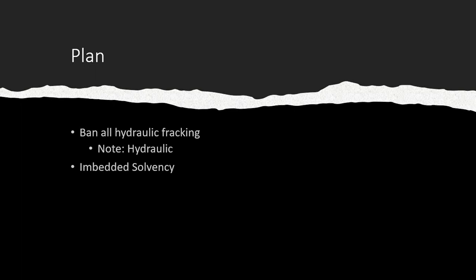The plan is very simple: it bans all hydraulic fracturing. Note the keyword 'hydraulic,' which refers to the use of water in this process. There are other fracturing methods that don't use water — the affirmative would not deal with those. The second key aspect of our plan is what I call embedded solvency. The advantages are all about why hydraulic fracturing is harmful, so ending it would create the benefits. Because there is a one-to-one relationship between fracturing and ending fracturing via the plan, there is no separate solvency contention — the plan itself is proof of solvency.